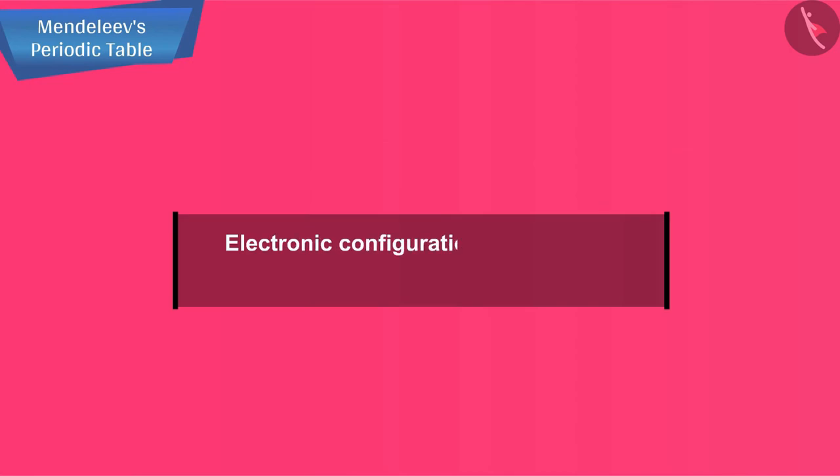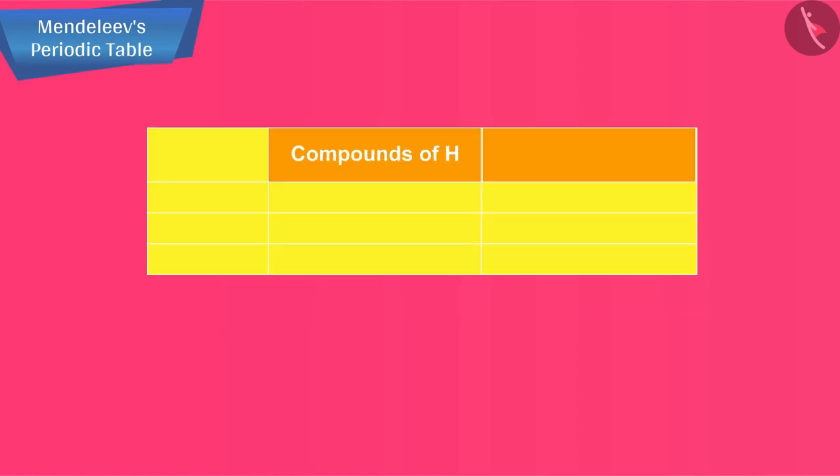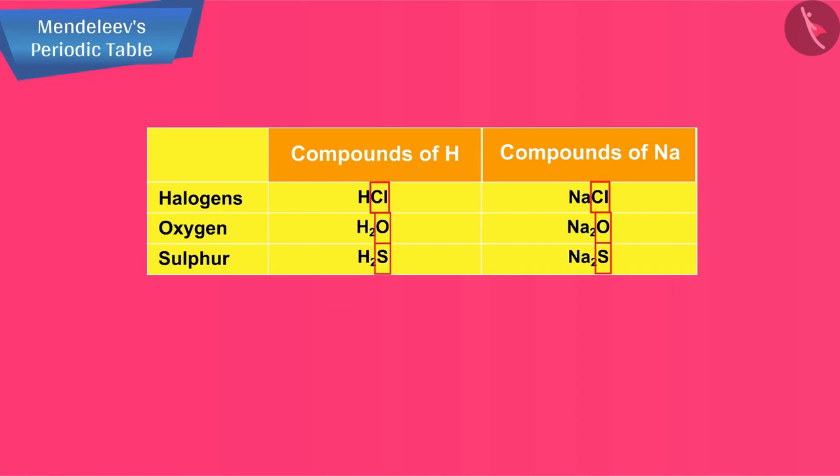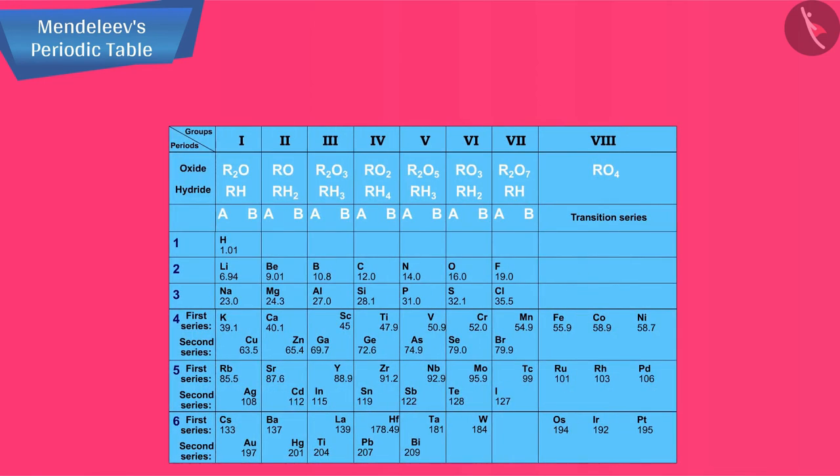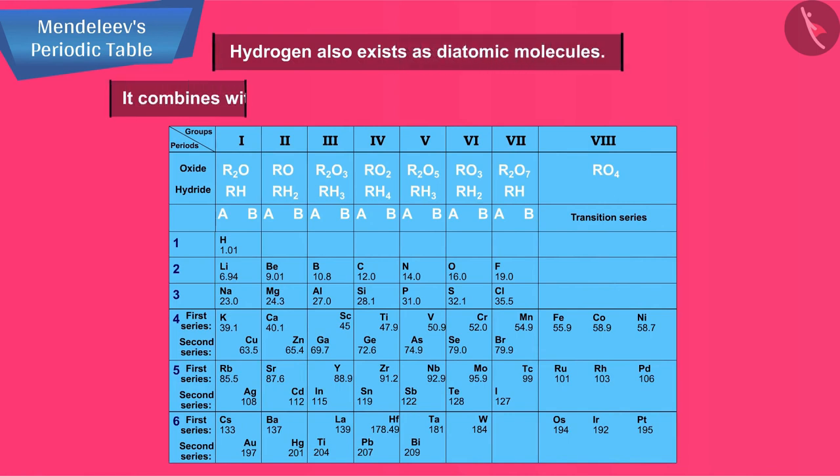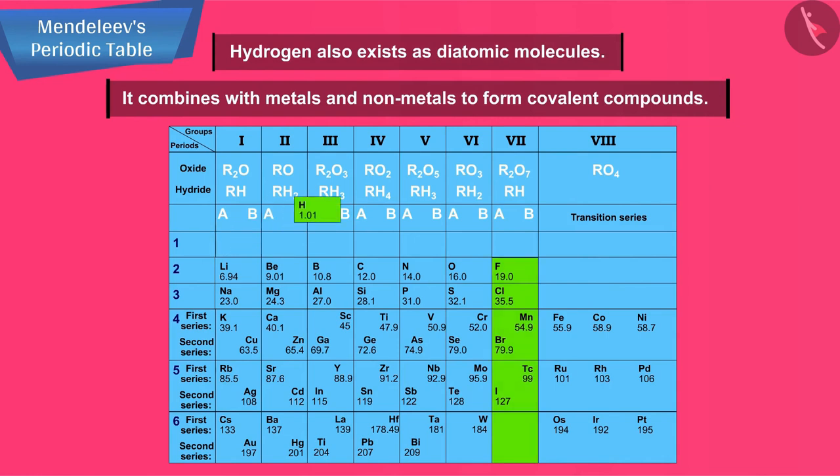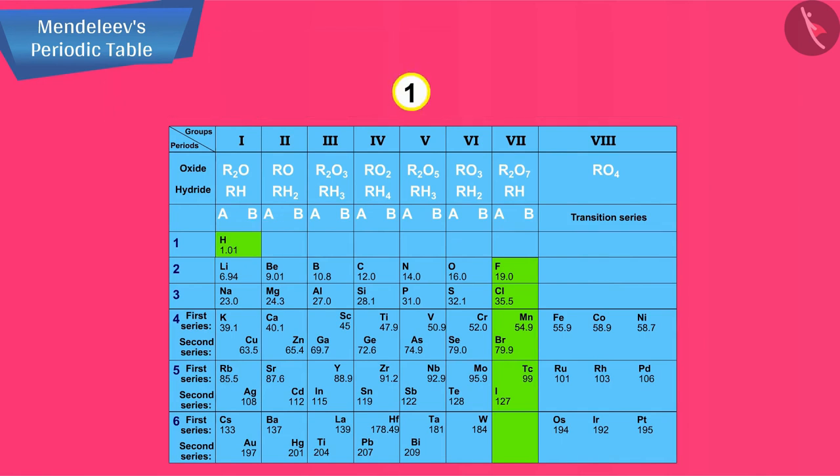Let us now discuss the limitations of Mendeleev's classification. Electronic configuration of hydrogen resembles that of alkali metals. Like alkali metals, hydrogen combines with halogens, oxygen and sulfur to form compounds having similar formulae. On the other hand, just like halogens, hydrogen also exists as diatomic molecules and it combines with metals and nonmetals to form covalent compounds. No fixed position can be given to hydrogen in the periodic table. This was the first limitation of Mendeleev's periodic table. He could not assign a correct position to hydrogen in his table.